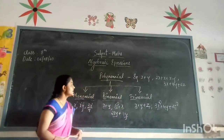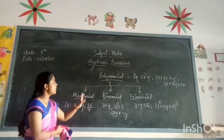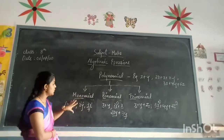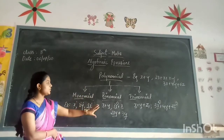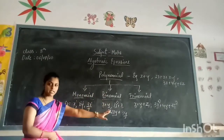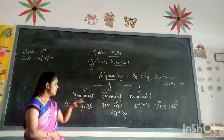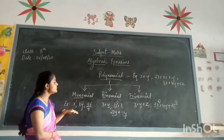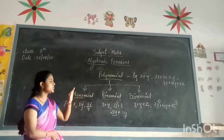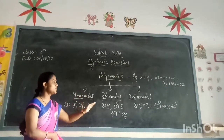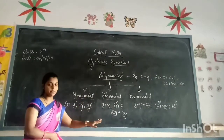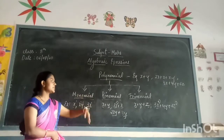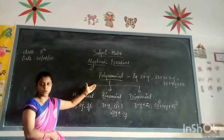So, polynomials are again divided into monomial, binomial, and trinomial. Monomial means a single term, binomial means two terms, trinomial means three terms, and more than three terms is also called a polynomial.